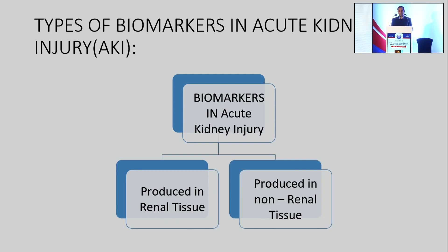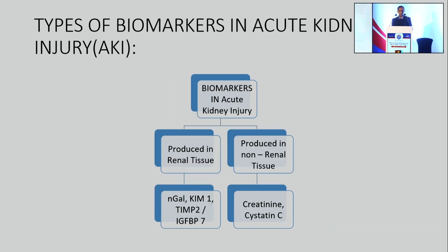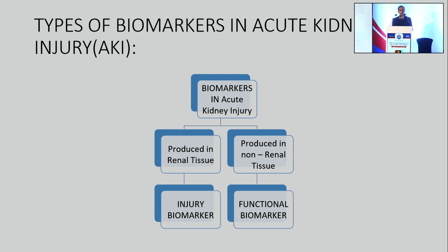What are the different types of biomarkers? I would differentiate them into two categories: those produced outside the kidney and those produced inside the kidney. When an individual has an insult like a nephrotoxic drug, ischemia, hypotension, or sepsis, some substances are produced outside the kidneys — like creatinine and cystatin C — which come to the kidney and reflect its filtering ability: these are functional biomarkers. On the other hand, molecules like NGAL, KIM-1, TIMP2, and IGBP7 are actually released by kidney tissue on injury and are caught in the blood or urine — these are called injury biomarkers.